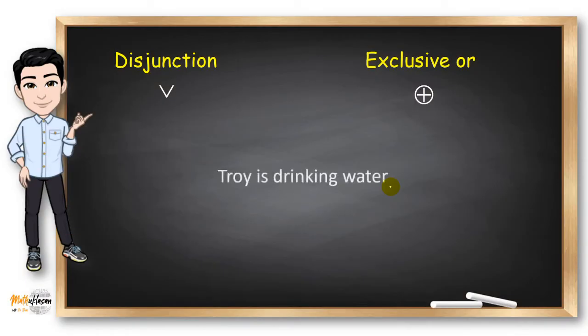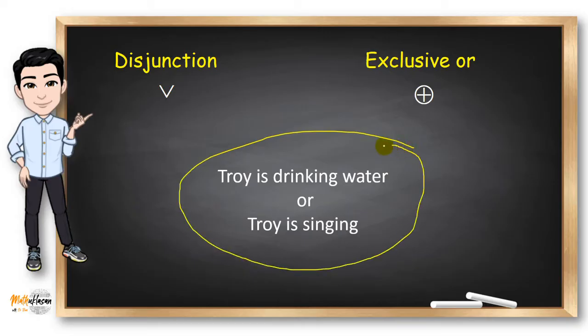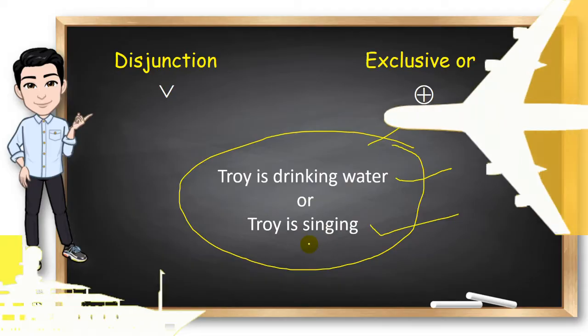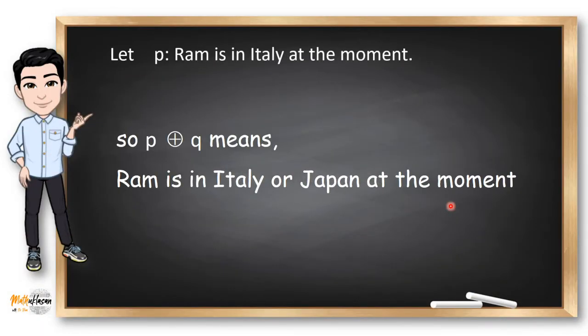Now how about this one? Troy is drinking water or Troy is singing. This compound proposition is for exclusive OR. Why? Because we cannot drink water and sing at the same time, right? So it's just either Troy is drinking water or is singing. Now how about we try another example for exclusive OR. Let P be the proposition RAM is in Italy at the moment. And Q be the proposition RAM is in Japan at the moment. So P, X or Q means RAM is in Italy or Japan at the moment. We chose exclusive OR instead of disjunction because RAM cannot be in Italy and Japan at the same time, right?